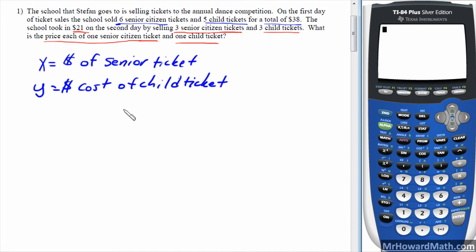So this underlined in blue, six senior citizen tickets, so 6X, plus five child tickets, 5Y, is equal to a total of 38. So that's from this information right here in the problem. It's important to underline the important stuff. Next one, total is $21, so it equals 21. Three senior citizen tickets, so 3X, plus three child tickets, 3Y, and that total is 21.